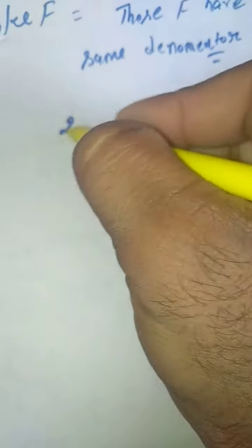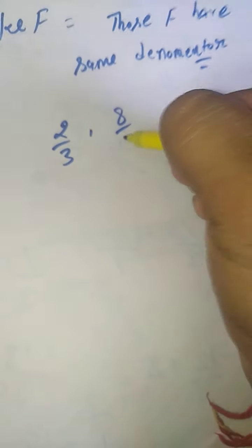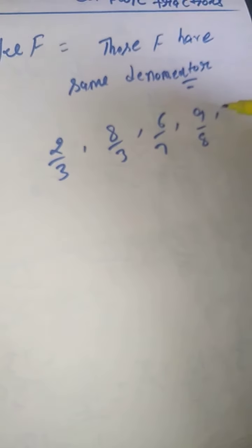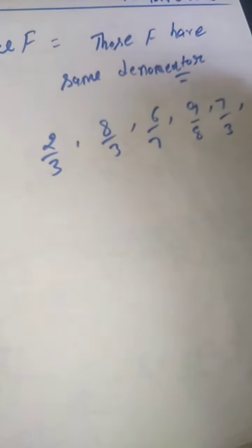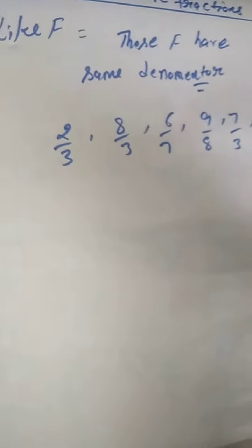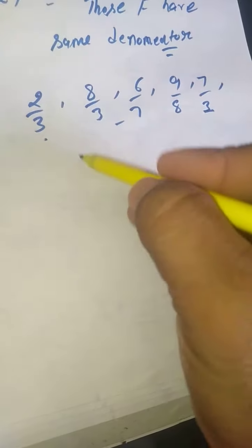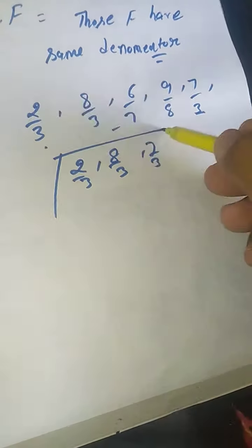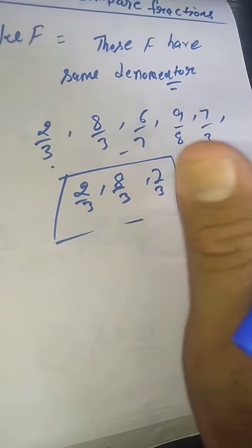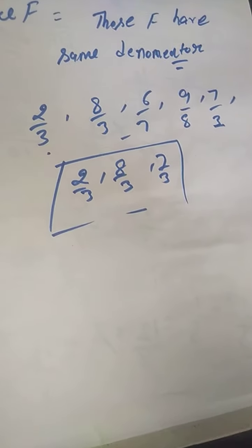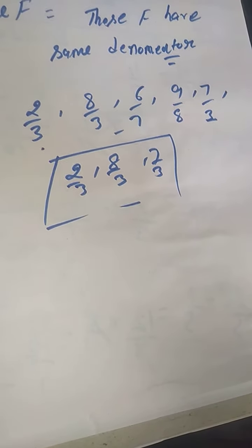For example: 2/3, 8/3, and 7/3. These fractions have the same denominator — 3. So these fractions are called Like Fractions. Those fractions that have the same denominator are called Like Fractions.